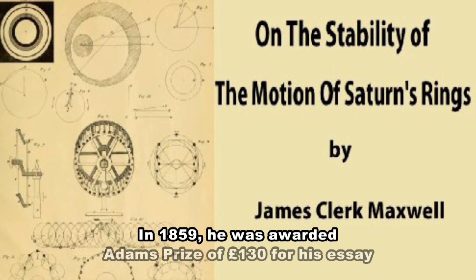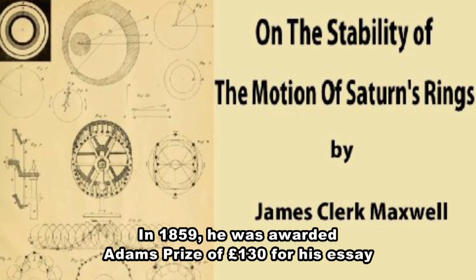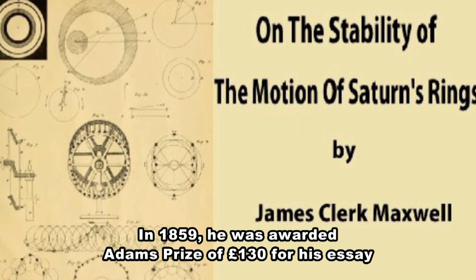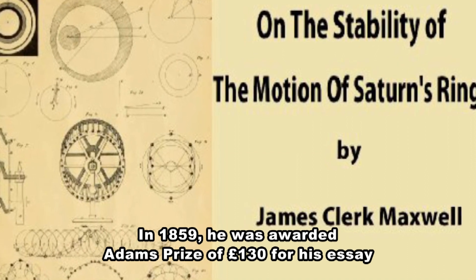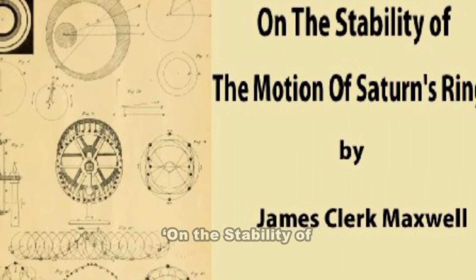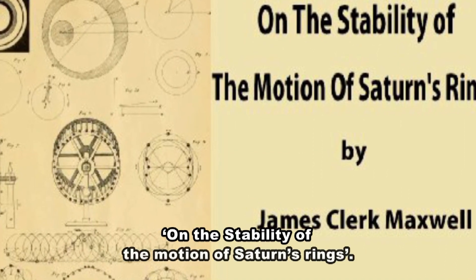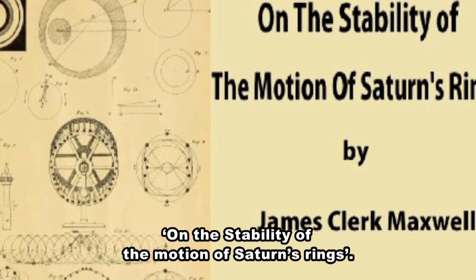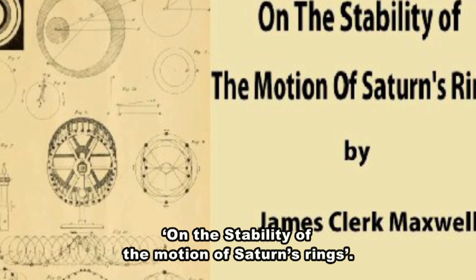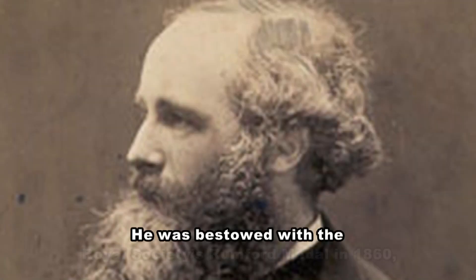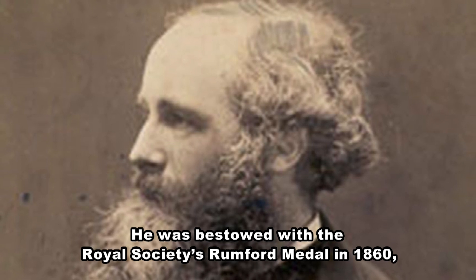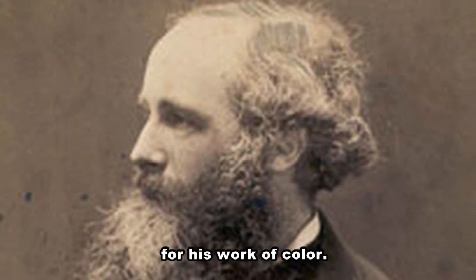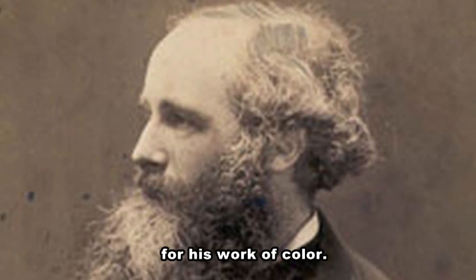In 1859, he was awarded the Adams Prize of £130 for his essay on the stability of the motion of Saturn's rings. He was bestowed with the Royal Society's Rumford Medal in 1860 for his work on color.